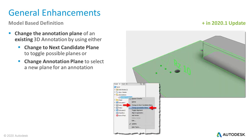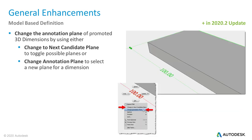As of the Inventor 2020.1 update, you can change the annotation plane of an existing 3D annotation or tolerance feature by using the new Change Annotation Plane command. Previously, you needed to delete annotations and place them again. The same behavior was added for 3D dimensions in the 2020.2 update — you can now change the annotation plane of an existing 3D dimension using the new Change Annotation Plane command.